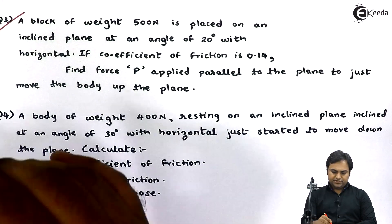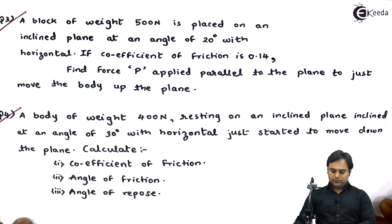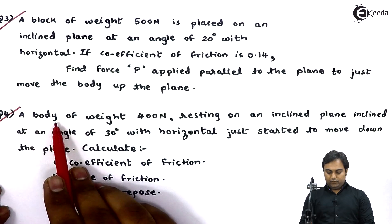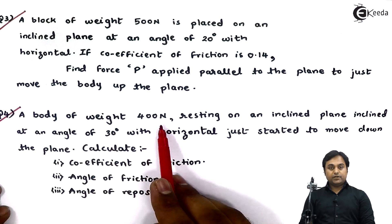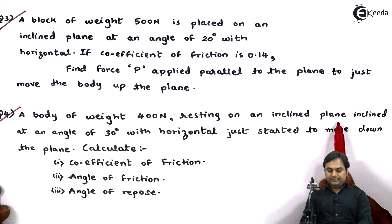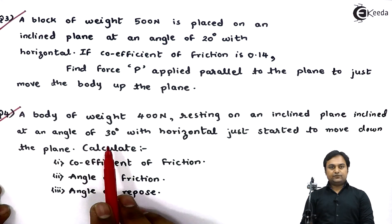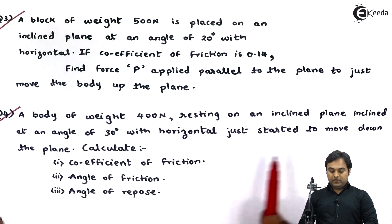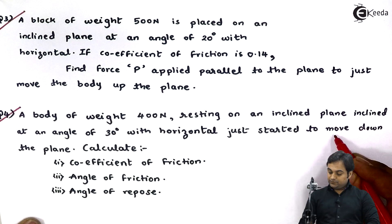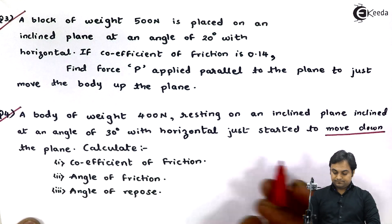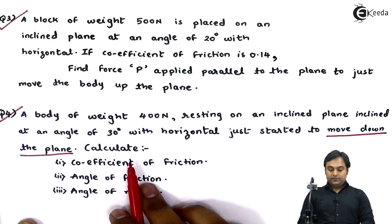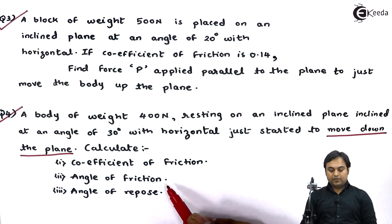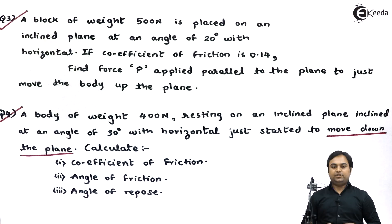Let us take the next question — question number four. A body of weight 400 Newton resting on an inclined plane inclined at an angle of 30 degrees with horizontal just started to move down the plane. Calculate: (1) coefficient of friction, (2) angle of friction, and (3) angle of repose.